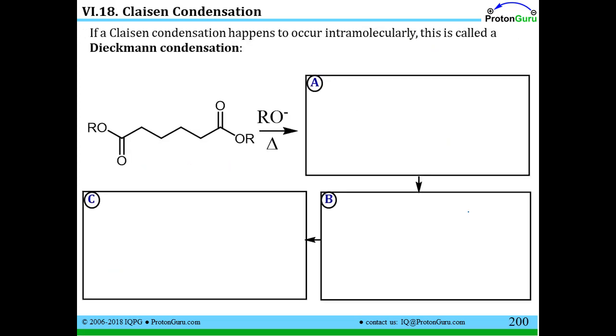Now if you've recently watched our aldol condensation video, you know that when we talked about the aldol reaction, we then talked about an intramolecular aldol reaction to make cyclic compounds. Now for whatever reason, when someone does a Claisen condensation reaction intramolecularly between an ester and another ester that are attached by a chain, this is called the Dieckmann condensation.